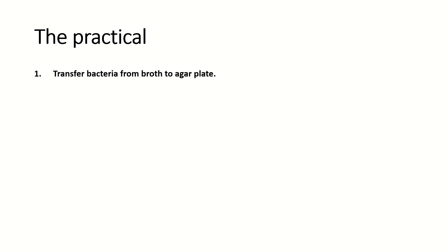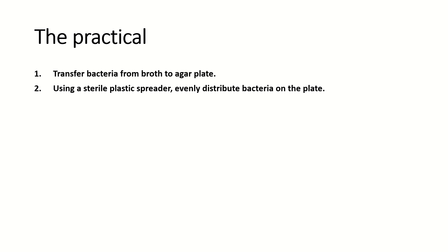Now we are going to get on to what the actual practical is. The first step is you transfer your bacteria from your broth, which is a solution that contains your bacteria, water, nutrients, and that kind of thing, to the agar plate, which is a Petri dish filled with agar gel. Then using a sterile plastic spreader — this may come in a specially sealed plastic bag, or if not, you will have to flame it in the Bunsen burner flame — evenly distribute the bacteria on the plate. Make sure to evenly distribute it to get reliable results.